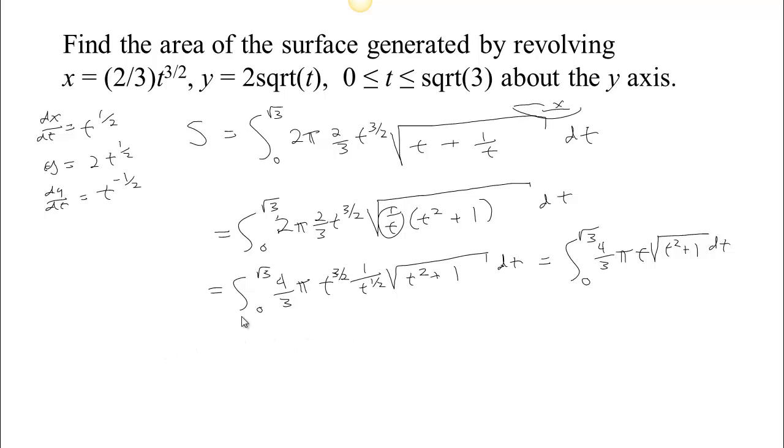This can be solved by a substitution. So if we make the substitution u equal t squared plus 1, then du equals 2t dt. We actually have a whole 4t dt, if you like.